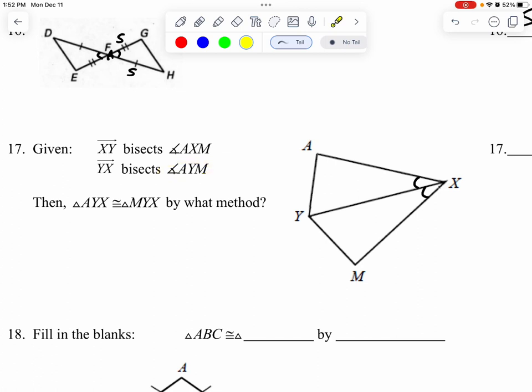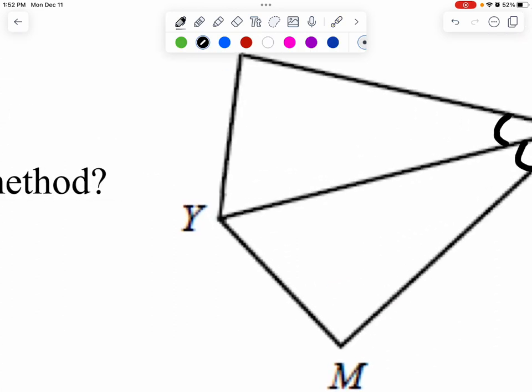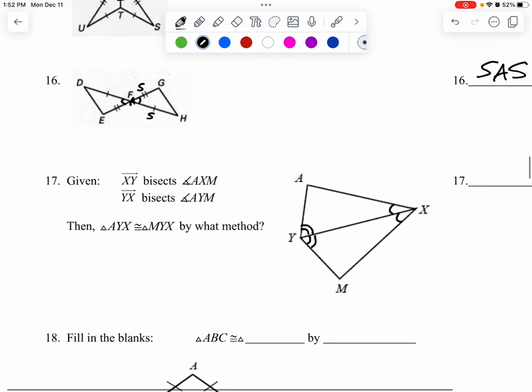Where's AYM? Let's trace it with our finger. A, Y, M. Okay, so this angle right here is being bisected also. So I'm going to double swoop that. Okay, so I have those two angles that are congruent.